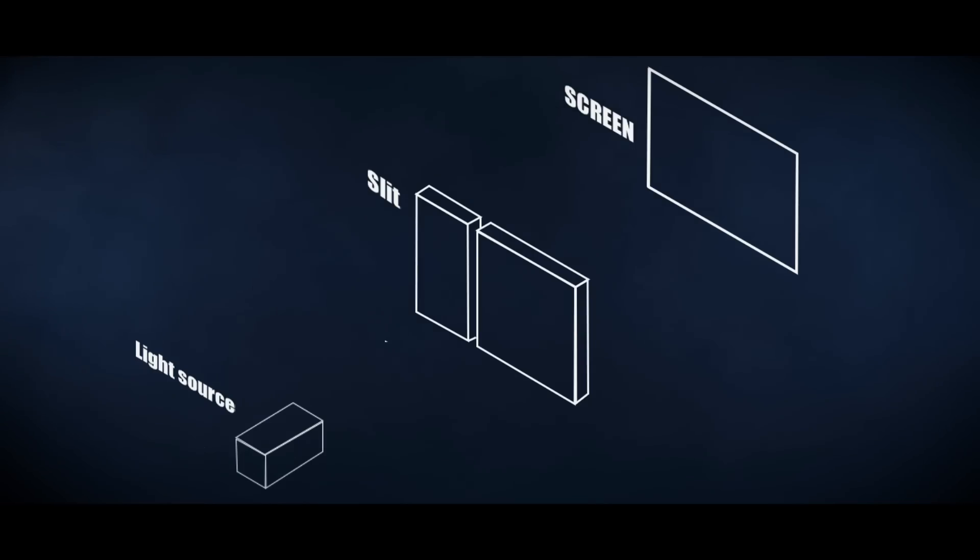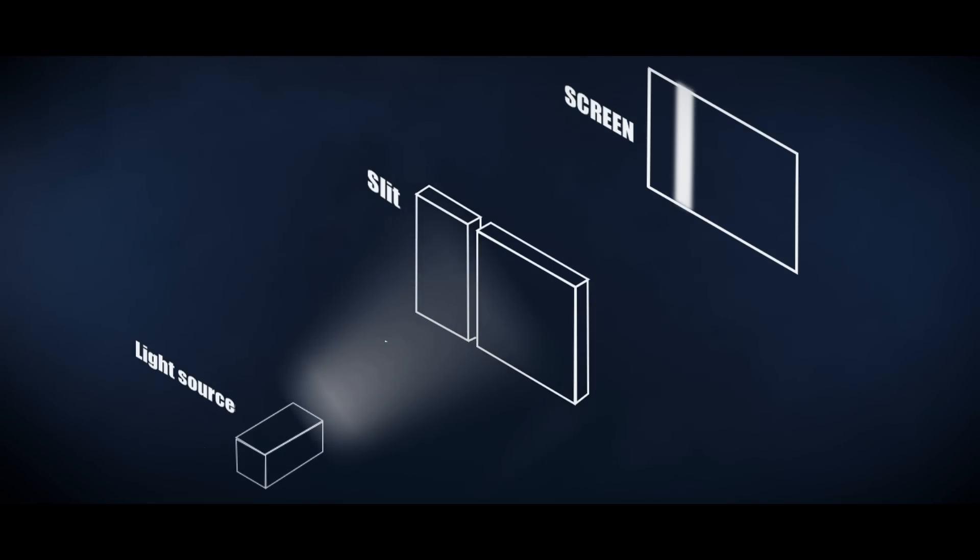This is getting a little complicated. So let's take a breath and look at a simple experiment. Here's a classic way to experience the wonder of the quantum world. First, we make a narrow slit in a plate and apply a light source to it. A straight line appears on the screen behind the plate.